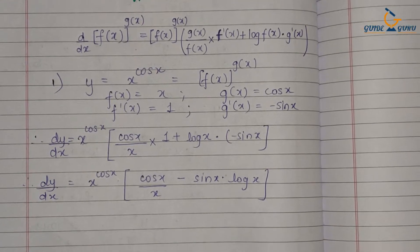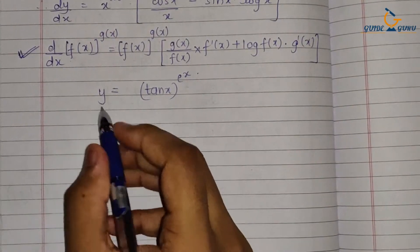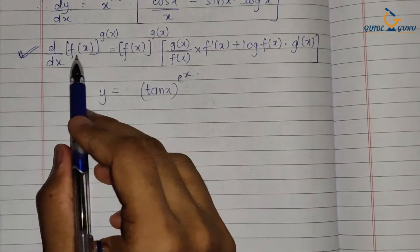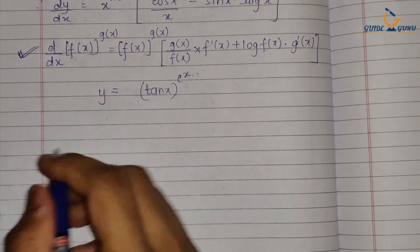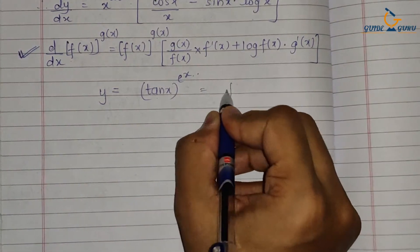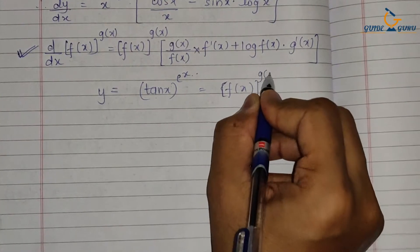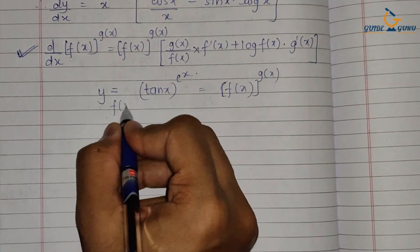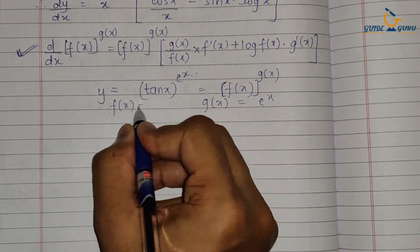Now let us move on to the next example. The question is y = tan(x)^(e^x). I have written the formula again so you can see it. This is again a function to the power another function, so f(x) = tan x and g(x) = e^x.